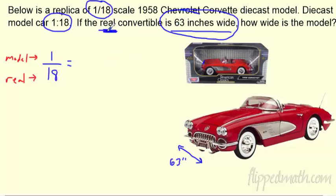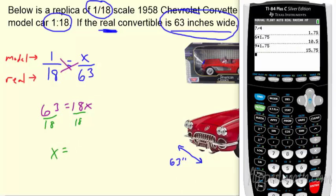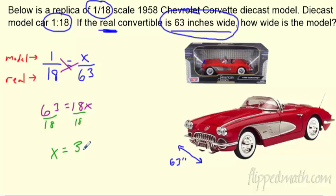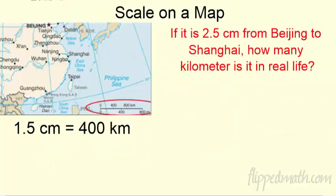The 63 inches is the real car, so it goes on the bottom. I'm solving for the model width on top. Cross-multiplying gives 63 equals 18x, then divide by 18. What is 63 divided by 18? It's 3.5 inches — that is the width of the model car. It's a real replica, to scale, with the exact proportions of the real thing.